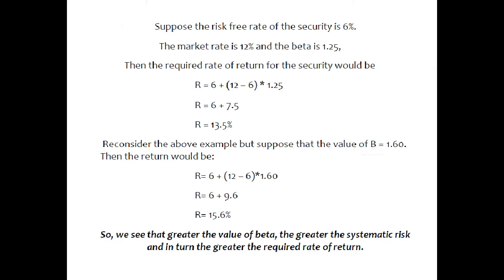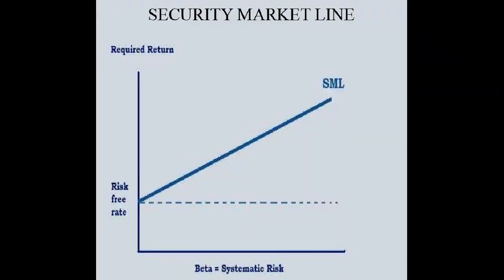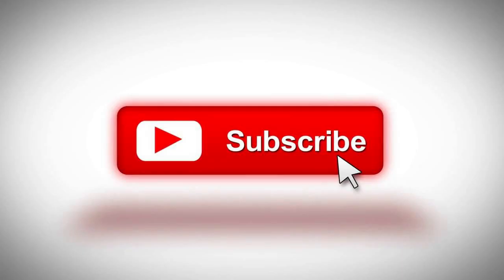As beta increases, risk increases, and as risk increases, return also increases. The Security Market Line (SML) is a graphical representation of the CAPM — it begins at the risk-free rate and slopes upward to the right. The dotted points represent the risk-free rate and the portion between the SML line and the dotted line is the risk premium. We'll be discussing problems related to this topic in the next video.